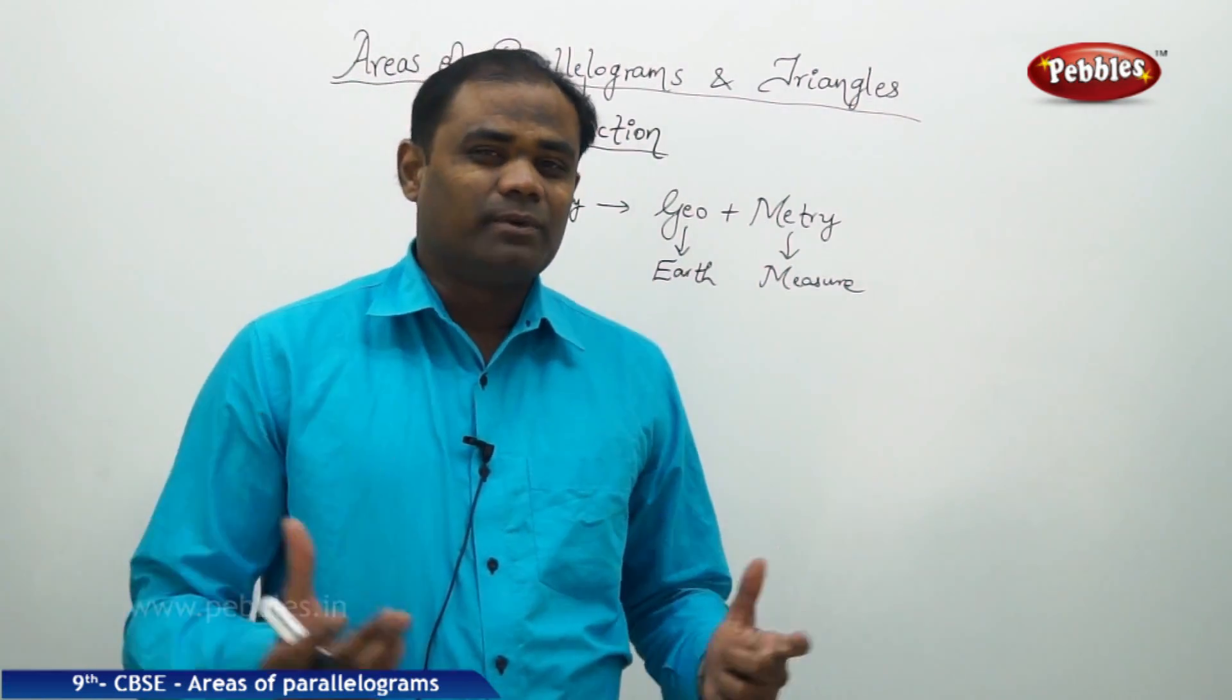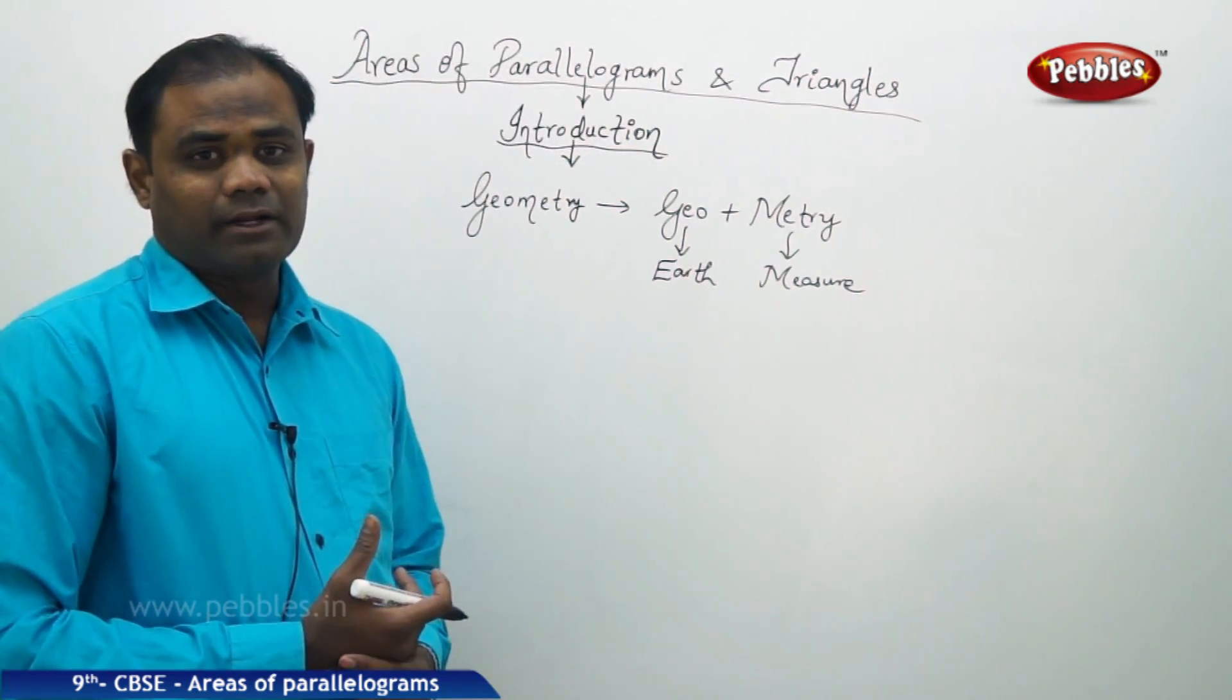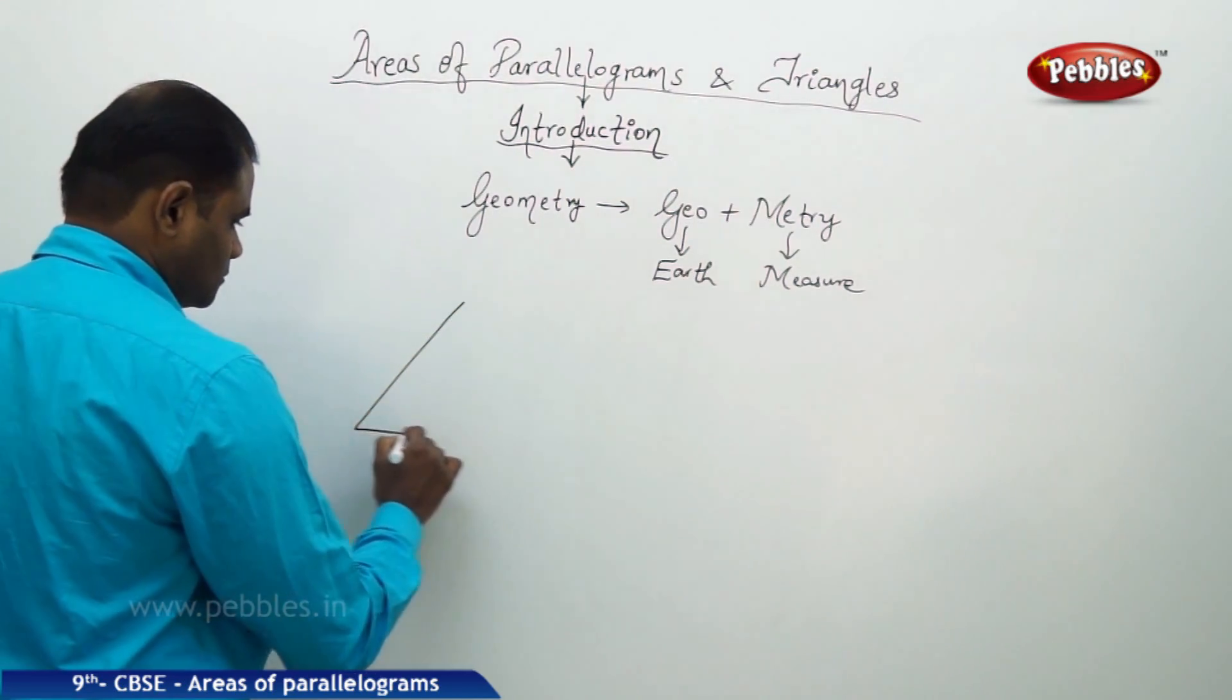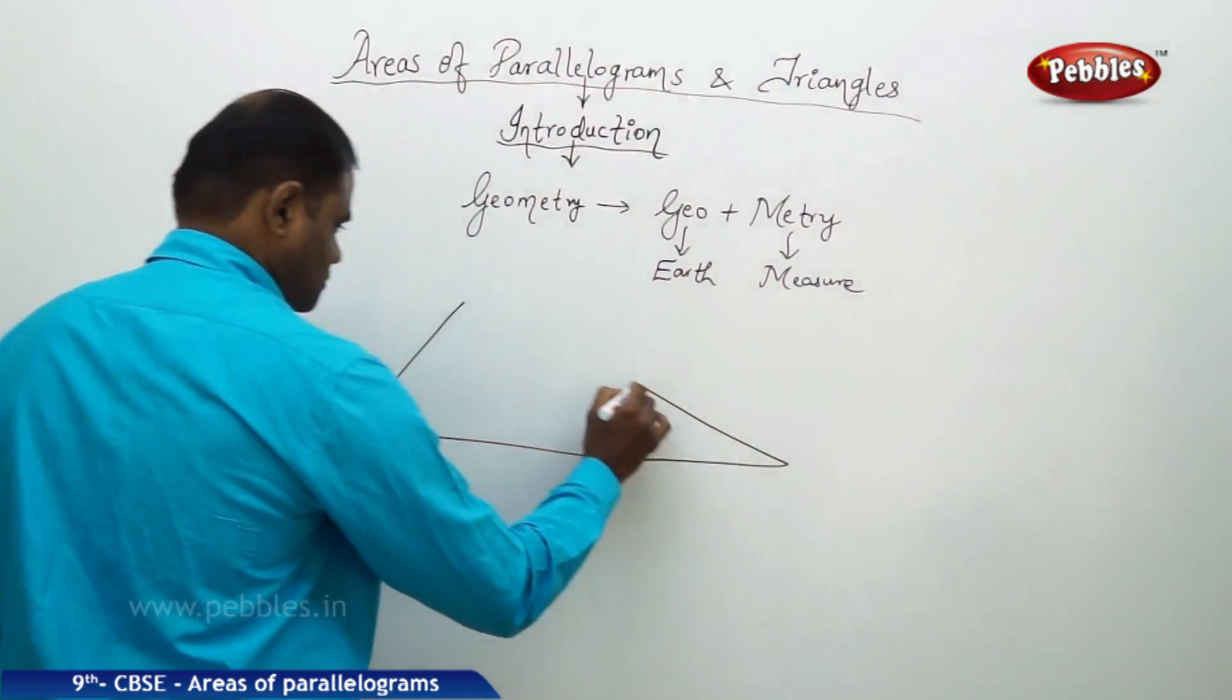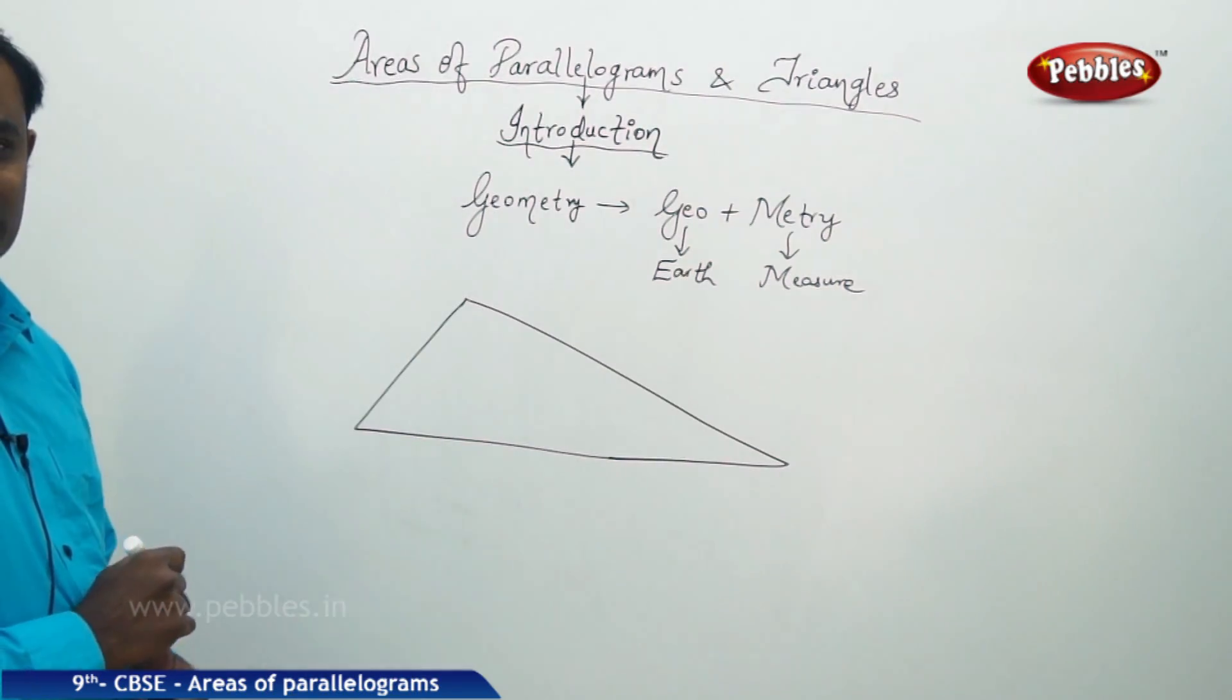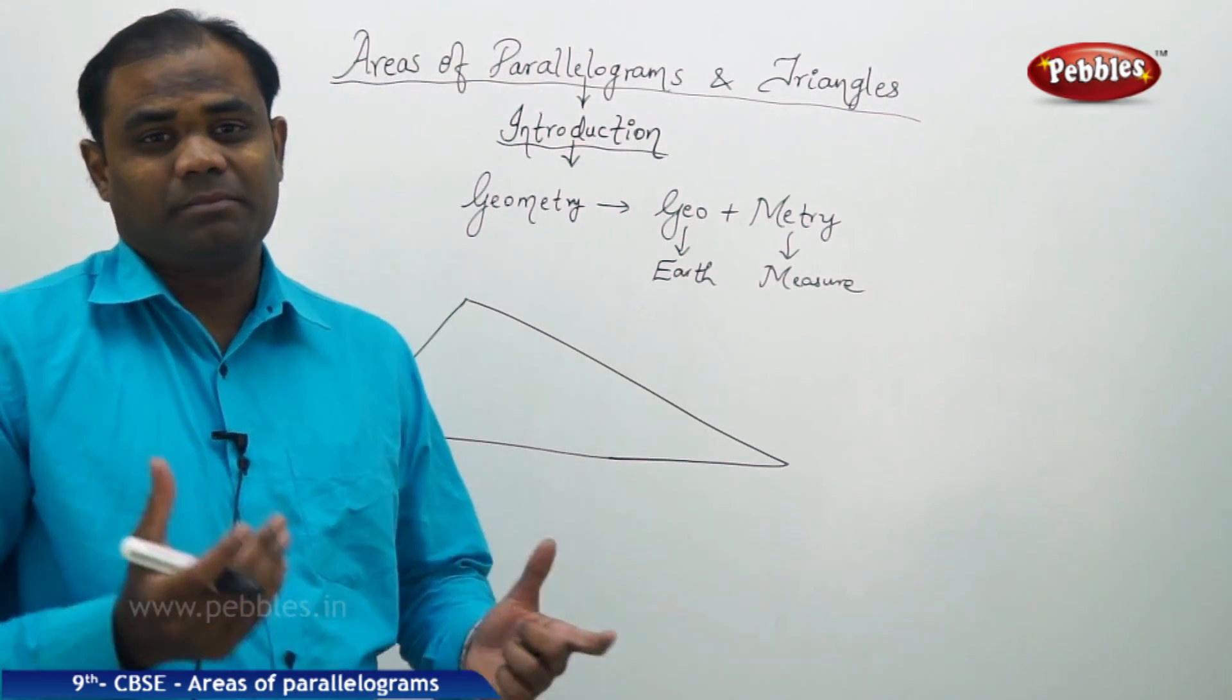To continue with, imagine I have an agriculture field which is triangular in shape. Imagine this is my plot, and this is the plot of land which I want to divide equally among three people.